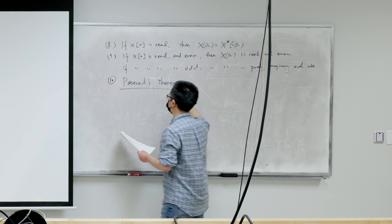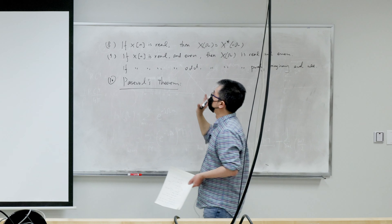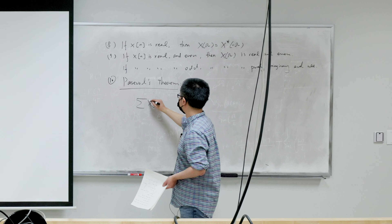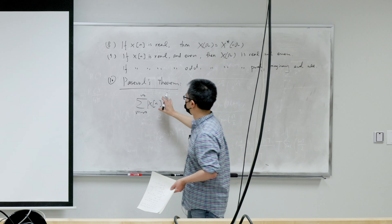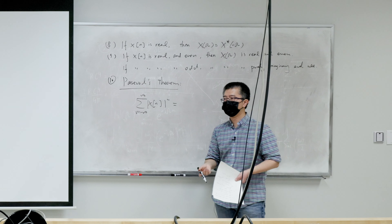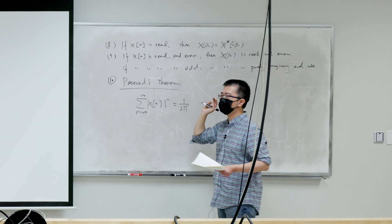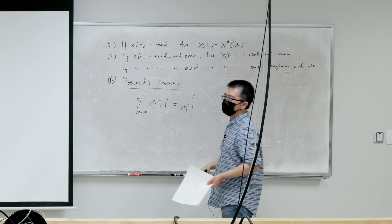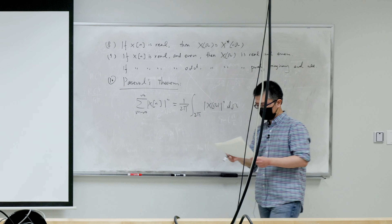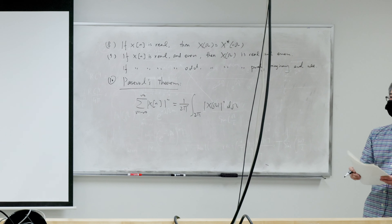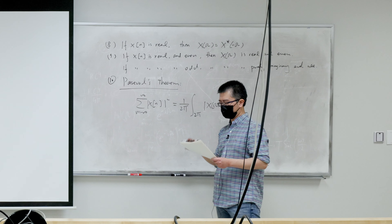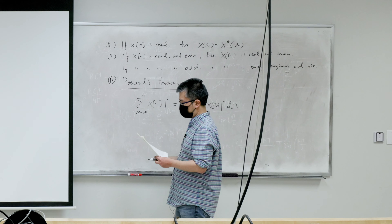The next important property is Parseval's theorem for computing energy and power. For x(n) — discrete and aperiodic in time — the energy in the time domain equals the integral over 2 pi of |X(omega)|^2 d(omega) divided by 2 pi. We compute power in the frequency domain, but the meaning is the energy. There's a simple example in the notes you can check.